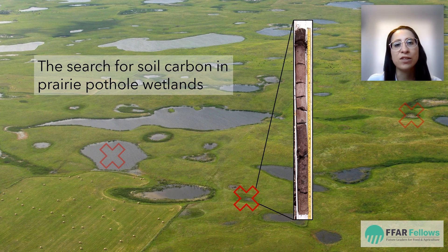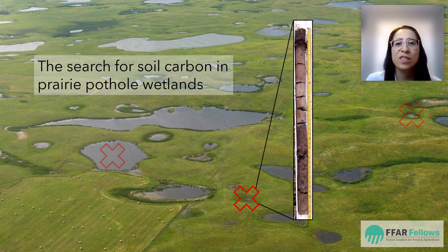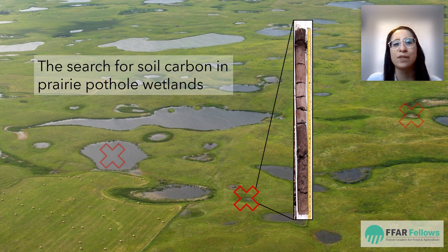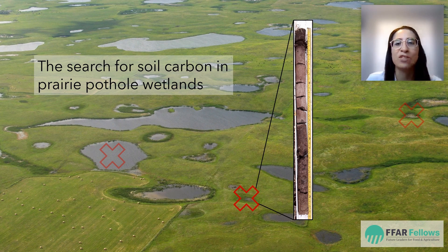As we move lower through the core the color gradually gets lighter and there's less soil carbon there. The soil color changes back to dark again though at about 53 centimeters, and this is because carbon got trapped away here a long time ago. This soil carbon that we see deep in the soil is the treasure that makes prairie pothole wetlands so important for storing carbon.